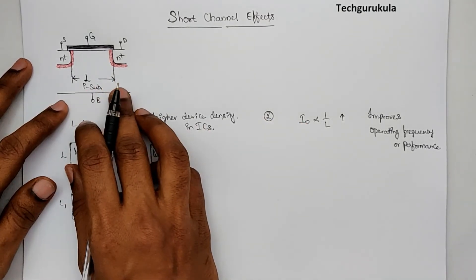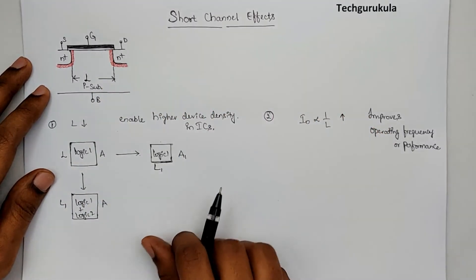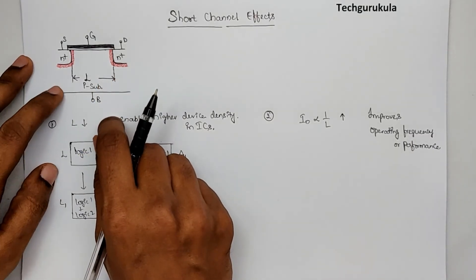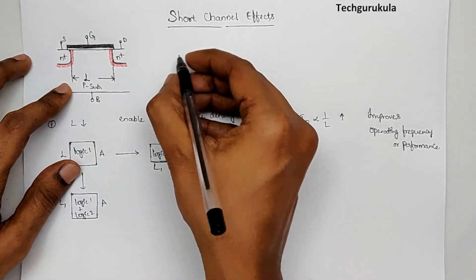So, when we reduce channel length, we would get some side effects we call short channel effects. But then, when would we call this a short channel? Let me define that here.